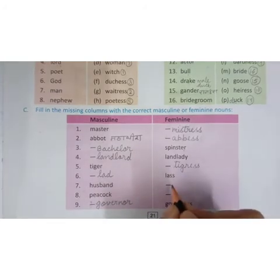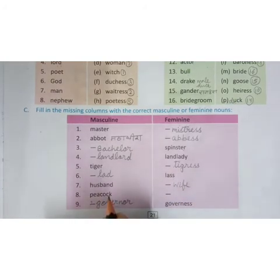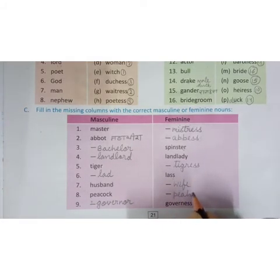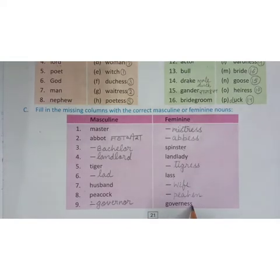Husband's feminine is wife. Peacock means mor. The word for morni is peahen, P-E-A-H-E-N. Governess. The masculine is governor. Governor means rajyapal. If she is a lady, then it's governess.